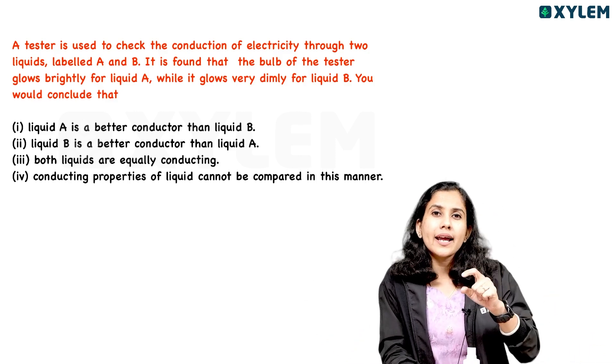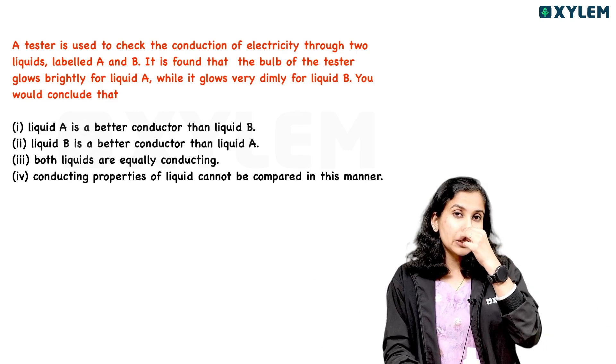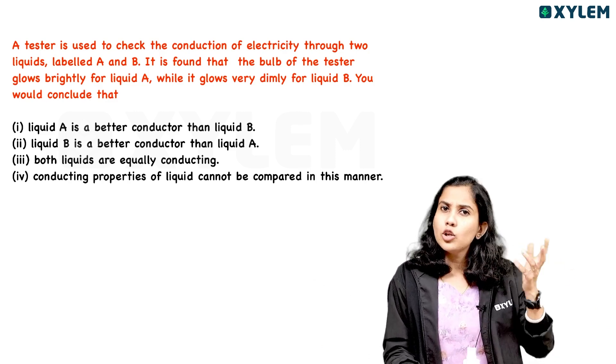We have two liquids, A and B, tested with a tester. Liquid A makes the bulb glow brightly, while liquid B makes it glow dimly. Liquid A is a better conductor than liquid B.